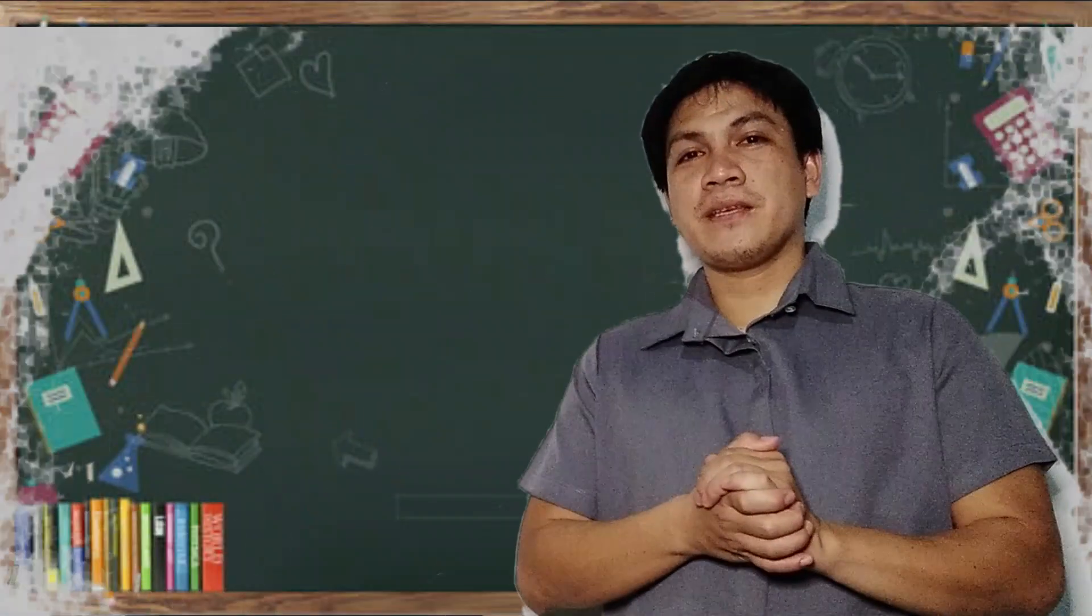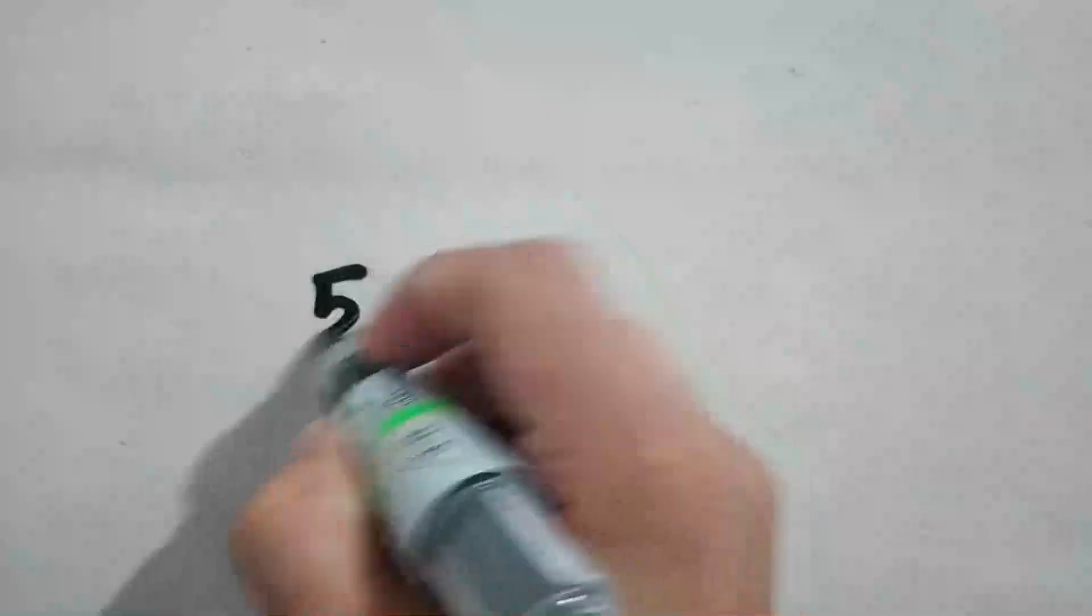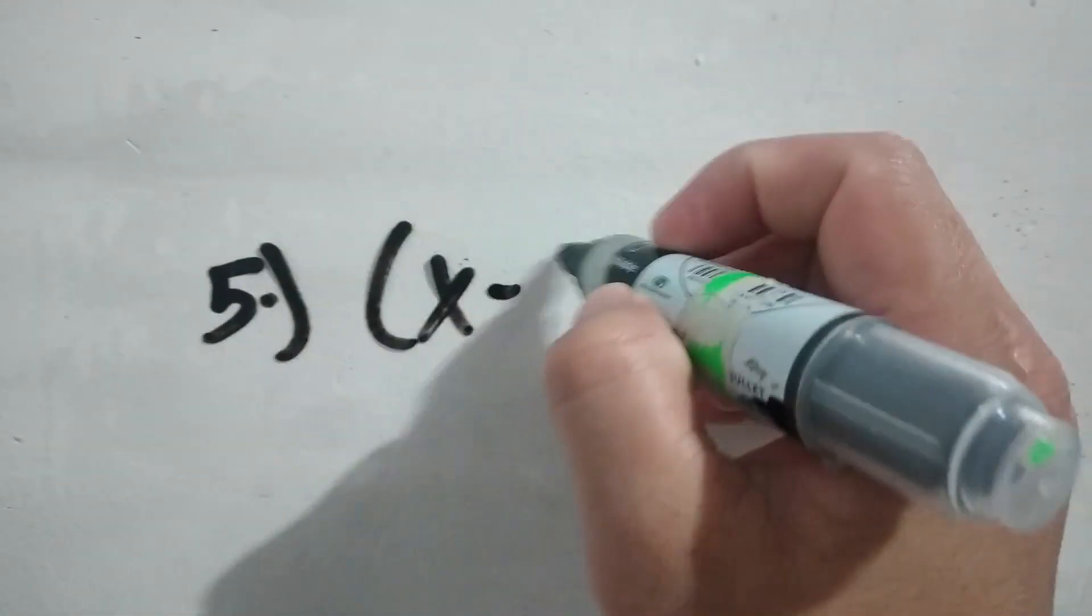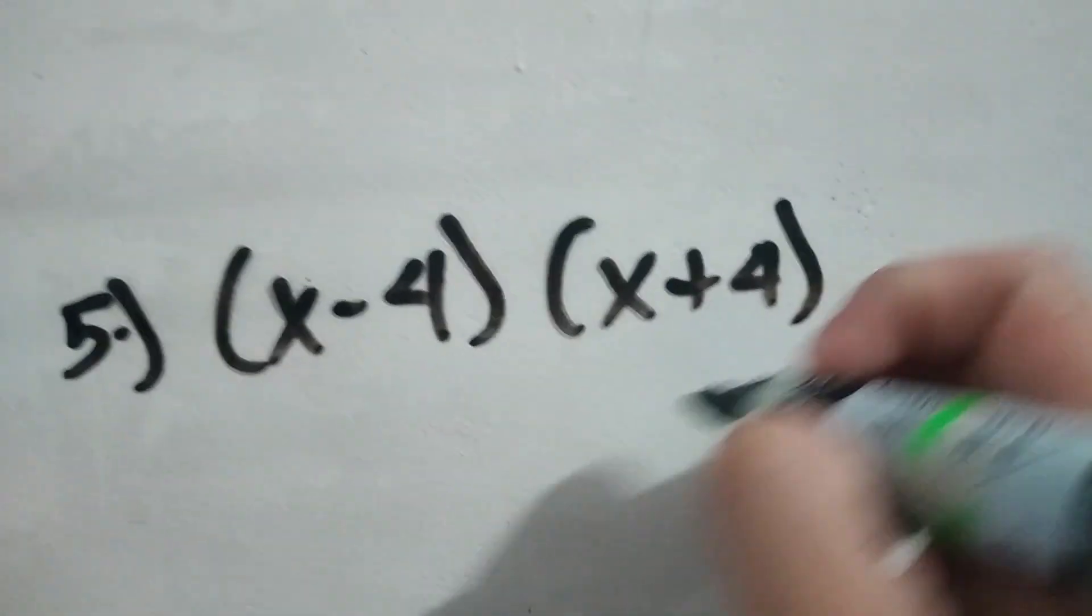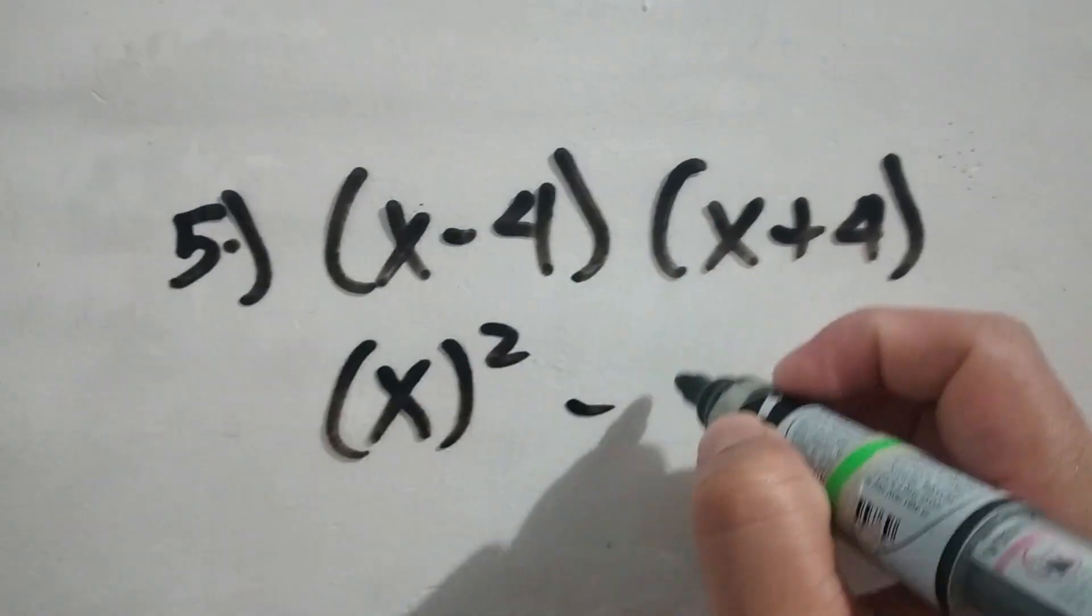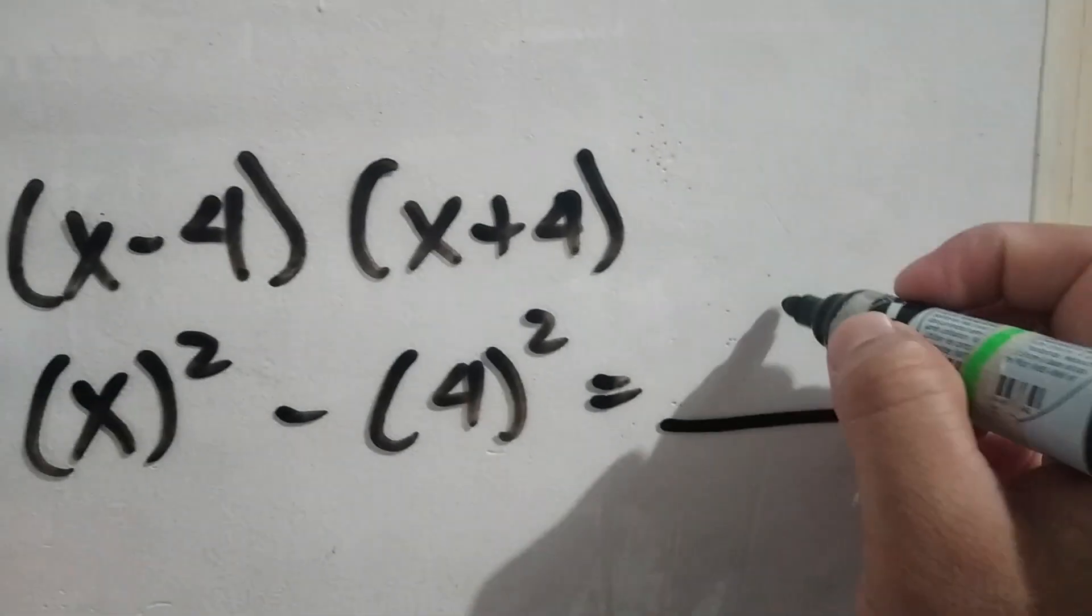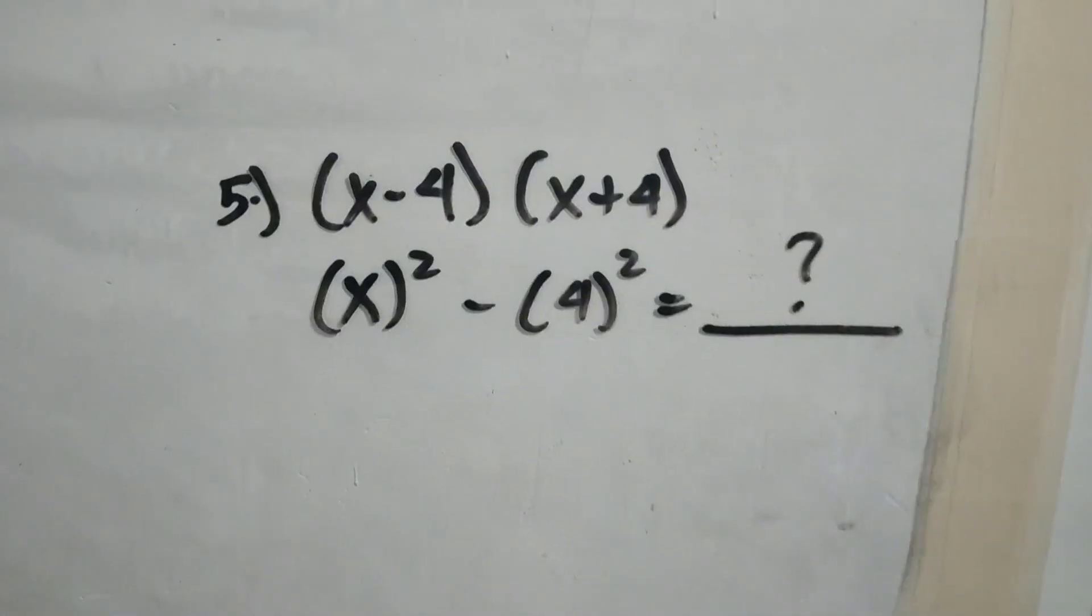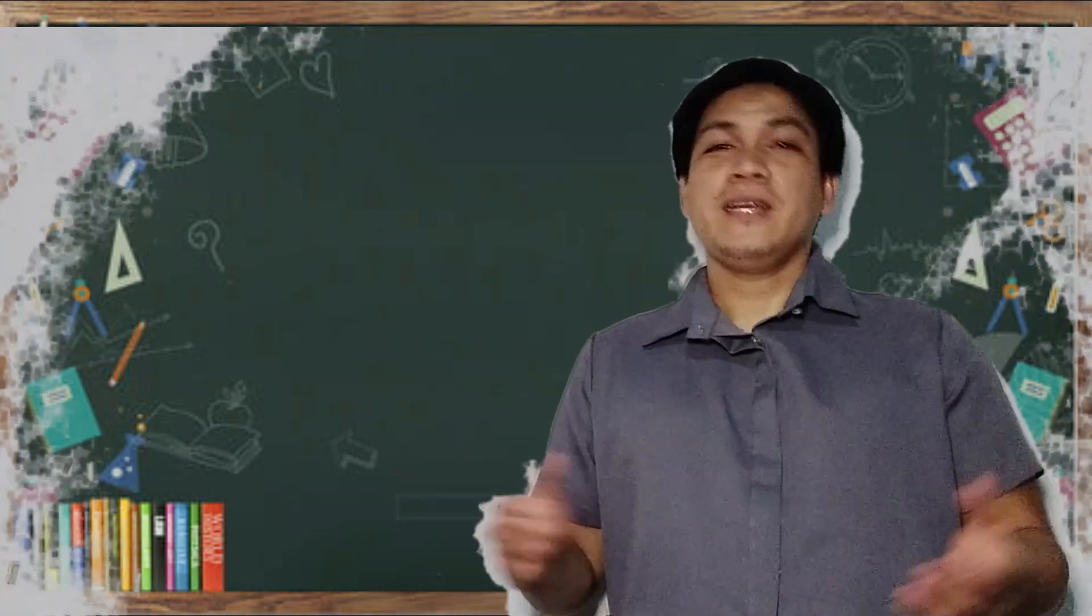Number five. x minus 4 times x plus 4. So this is an example of the sum and difference of two terms. And this is again a special product. We are just going to square the first term, minus square the last term. And that will be the product.